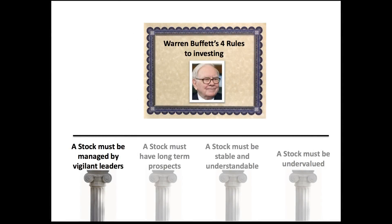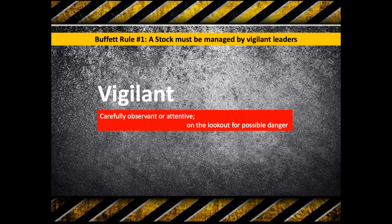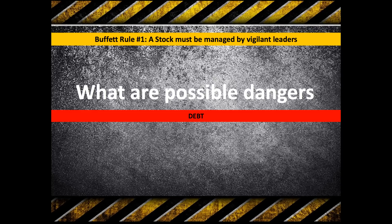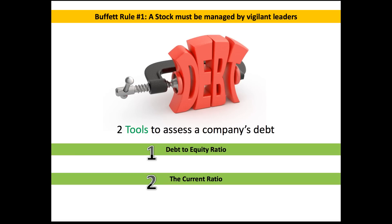As you learned in the previous lesson, there are four rules, and the one we're focusing on is that a stock must be managed by vigilant leaders. Vigilant means to be carefully observant or attentive, on the lookout for possible danger. A vigilant manager is constantly looking for what could go wrong and protecting the business from those potential dangers. As a stockholder and owner, the thing you've got to watch out for is debt.